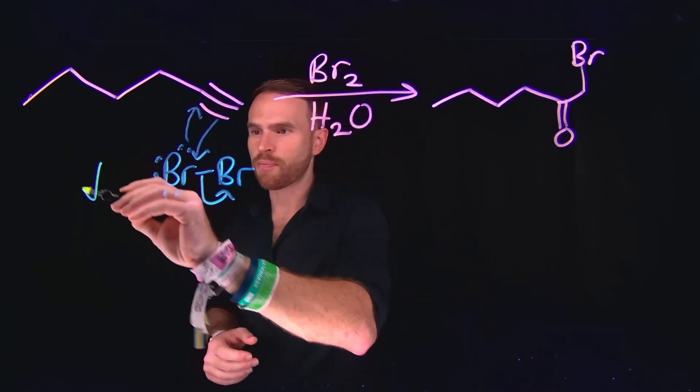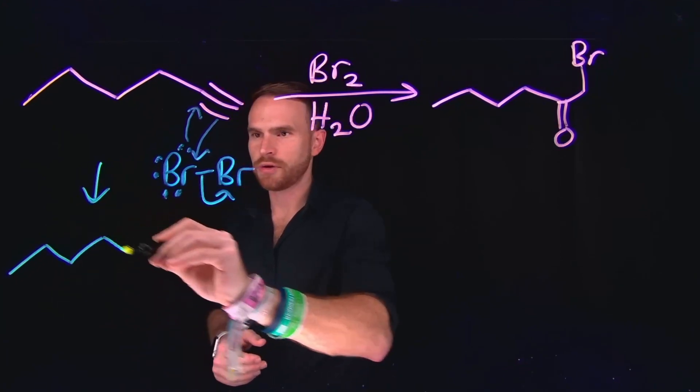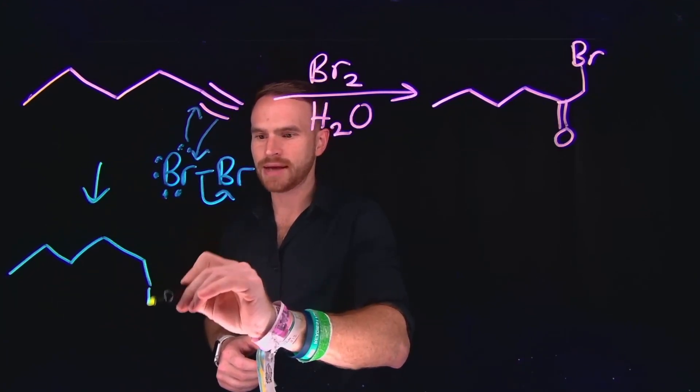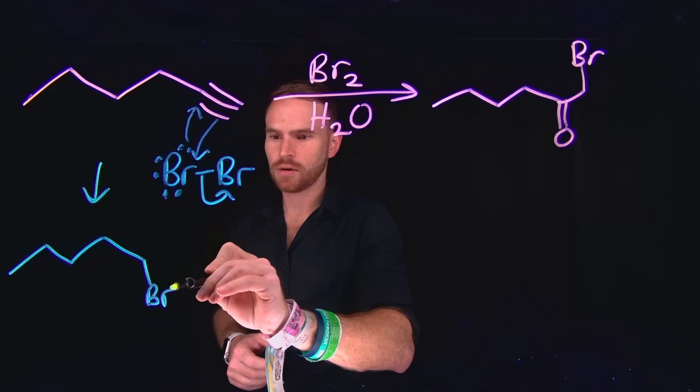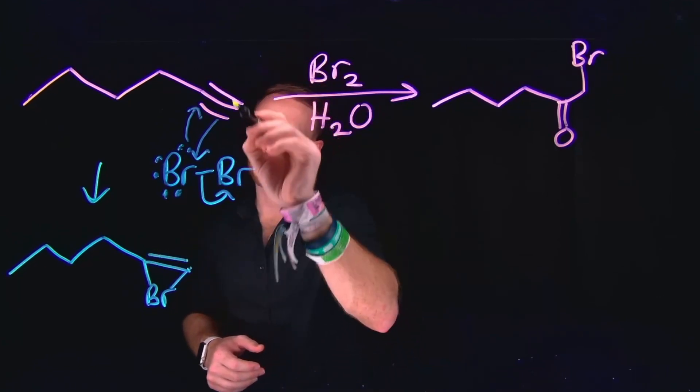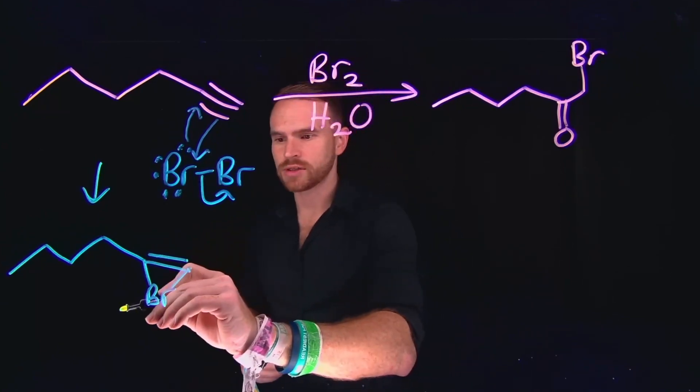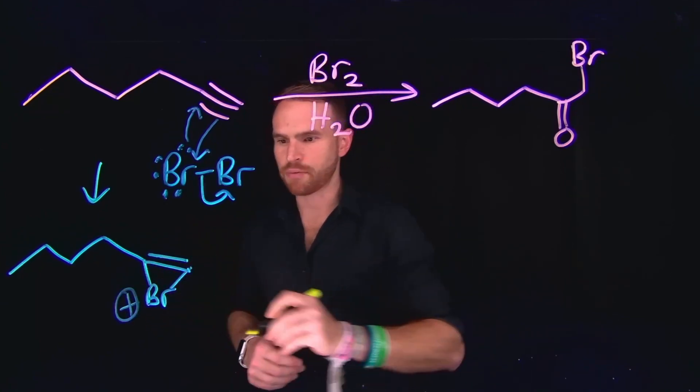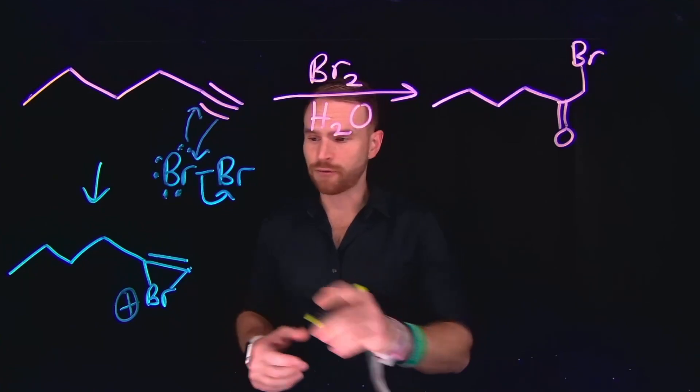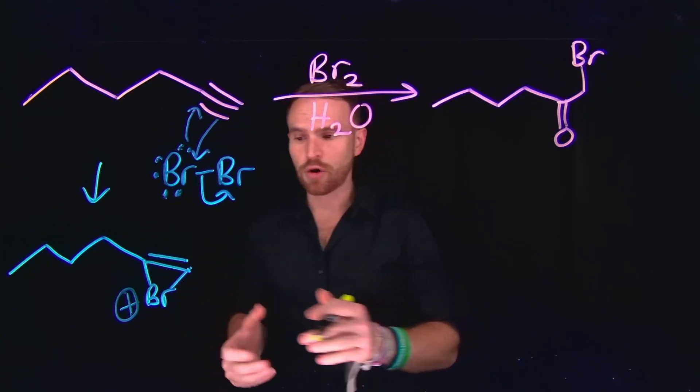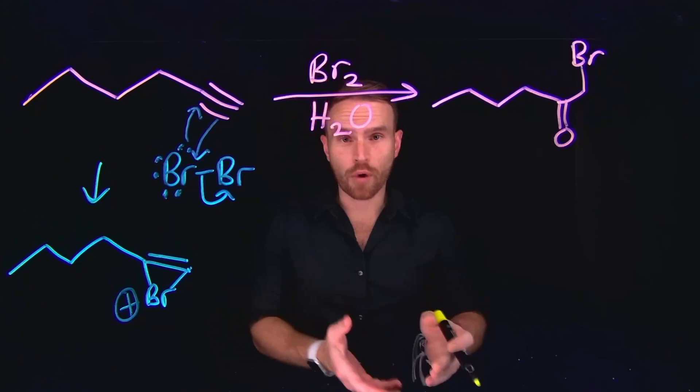And this is going to generate our bromonium ion. So we can draw the bromonium ion now as a bromine with a three-membered ring, and then we still have another pi bond between these two carbon atoms. Importantly, this is going to leave this position at the bromine positively charged. The formal charge is going to be positive at that bromine position, which is why we call it a bromonium ion.